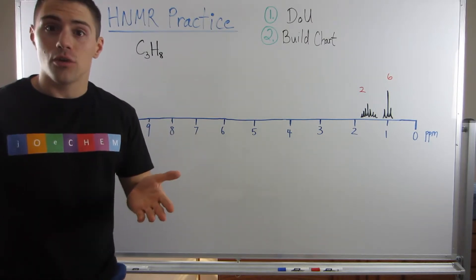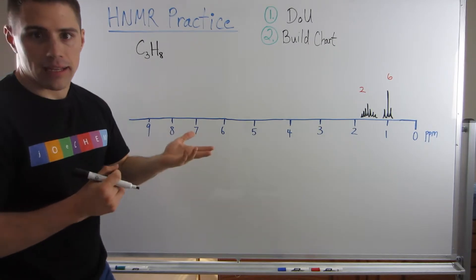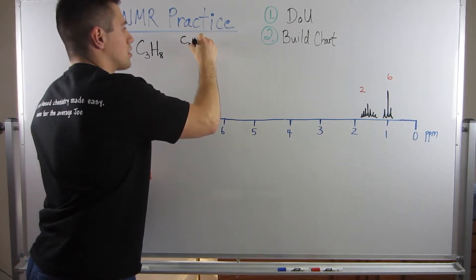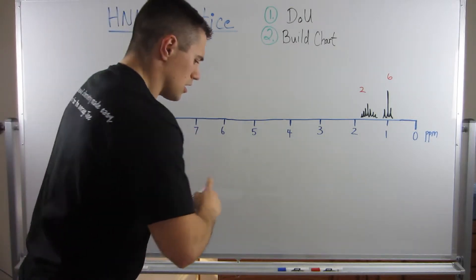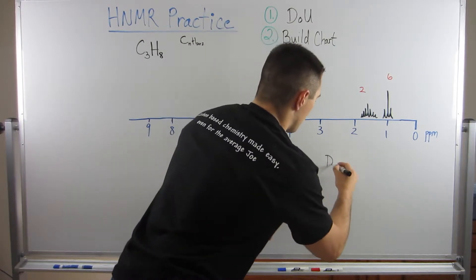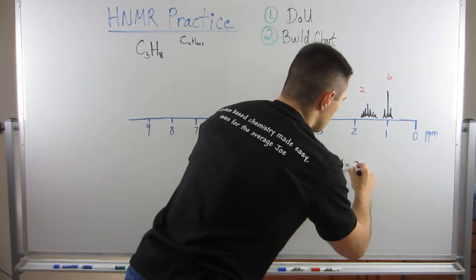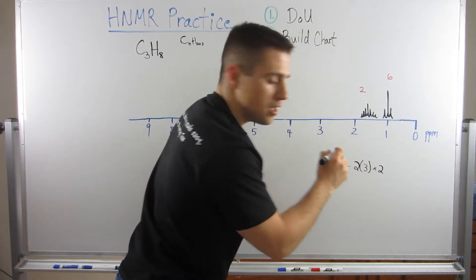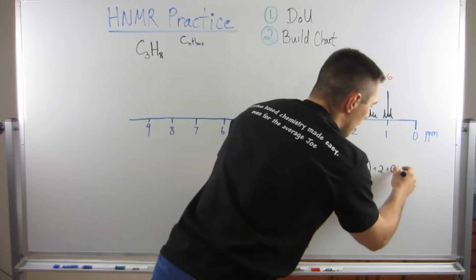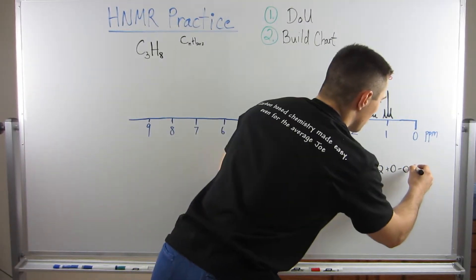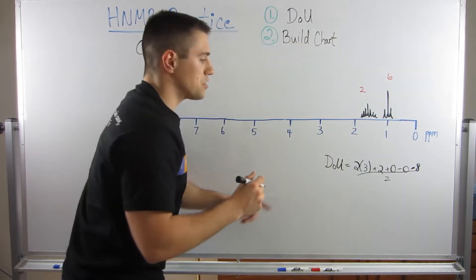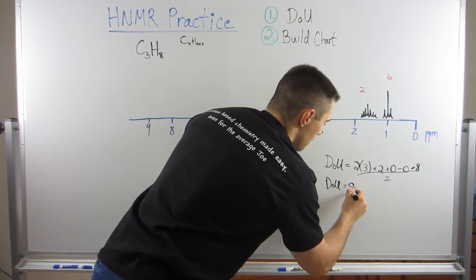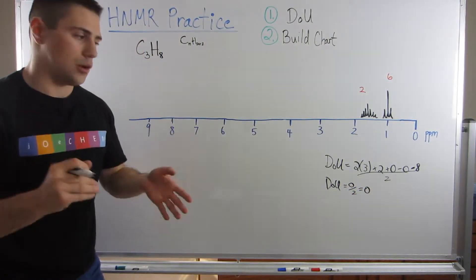For the degrees of unsaturation formula: 2 times the number of carbons (we have 3), plus the built-in 2, plus the number of nitrogens (0), minus the number of halogens (0), minus the number of hydrogens (8), all divided by 2. That gives us 6 plus 2 is 8, minus 8 is 0, divided by 2 — so zero degrees of unsaturation.